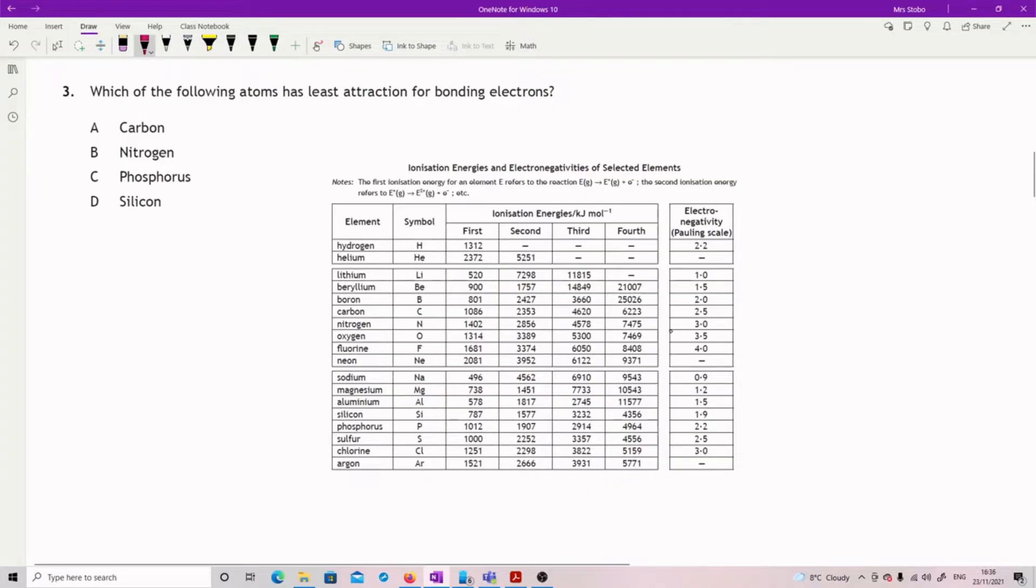Which of the following atoms has least attraction for bonding electrons? I have gone and got the same page. Ionizations and electronegativity. We are looking for the least attraction, so we need the lowest electronegativity on the Pauling scale.